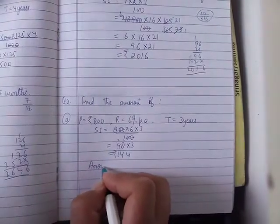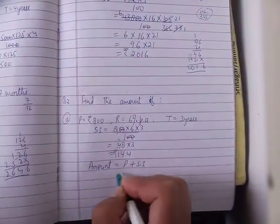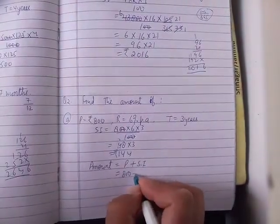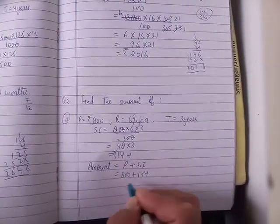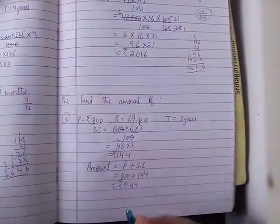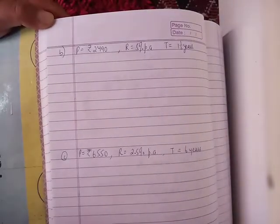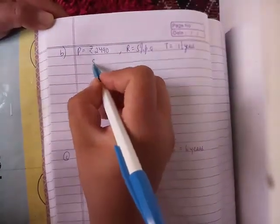Amount equal to principal plus simple interest. Principal is 800 plus interest 144. Total is 944, the amount.